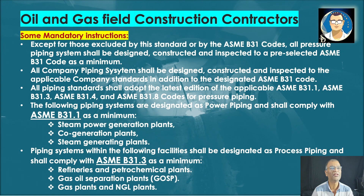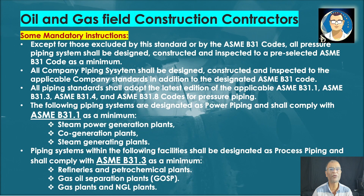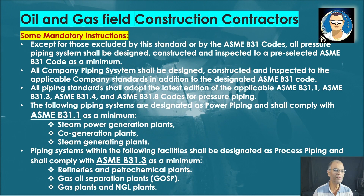In the standards, there are mandatory instructions: all pressure piping systems shall be designed, constructed, and inspected to a pre-selected ASME B31 code as a minimum. Piping standards shall adopt the latest edition of applicable codes: B31.1 for power piping, B31.3 for process piping, and B31.4 and B31.8 for pipeline-related utility piping. Areas following B31.1 include steam power generation plants, co-generation plants, and steam generation plants.